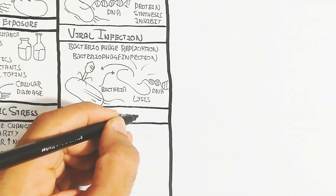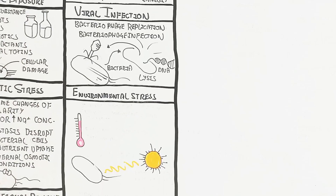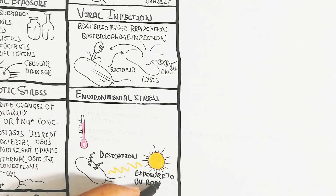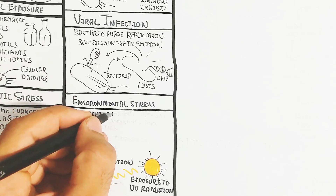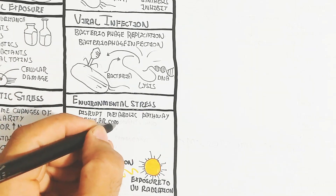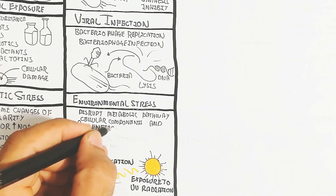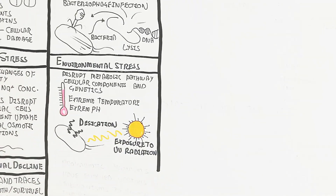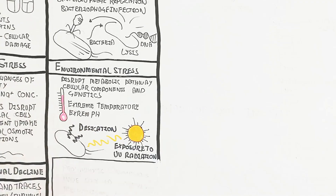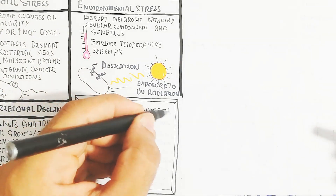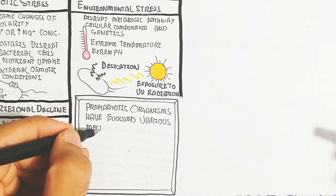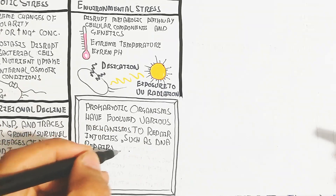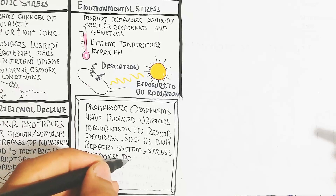Environmental stress includes heat and exposure to UV radiation. Continuous UV exposure can damage the bacterial colony, the microbiome on our skin, disrupting metabolic pathways, cellular components, and genetics, leading to cell injury. Extreme temperature and pH also contribute to environmental stress. Notably, prokaryotic organisms have evolved various mechanisms to repair injuries, such as DNA repair systems, stress response pathways, and adaptation strategies.